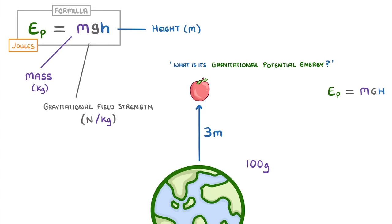The first things we need to do are write out our equation and check that everything's in the right units. So we need to convert the 100 grams into kilos by dividing it by 1000 to give 0.1 kilos.